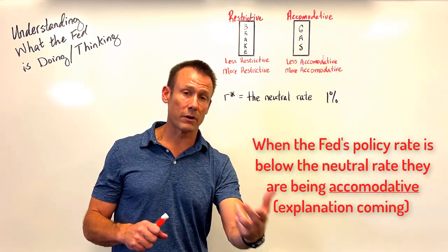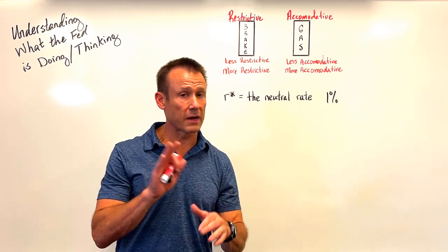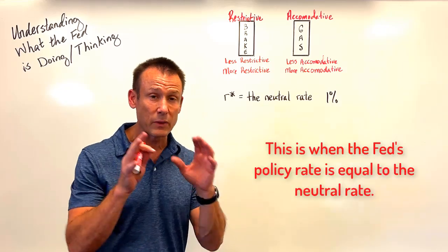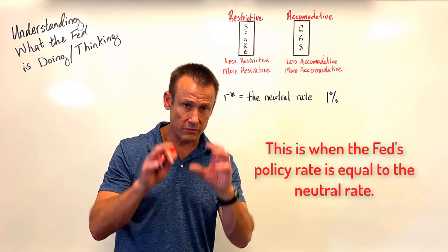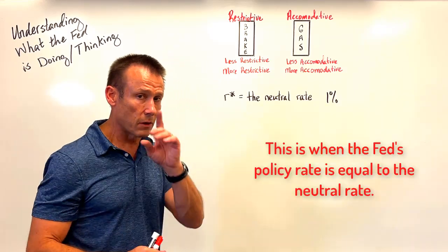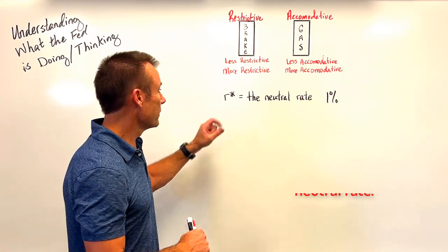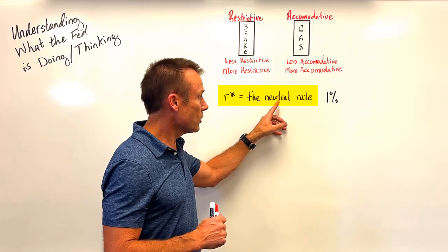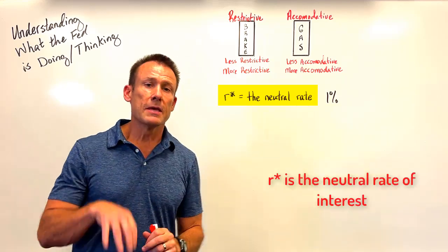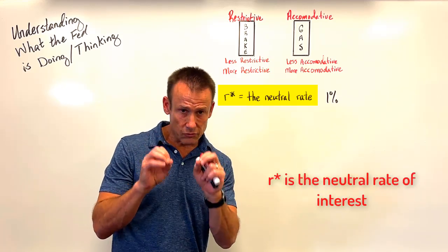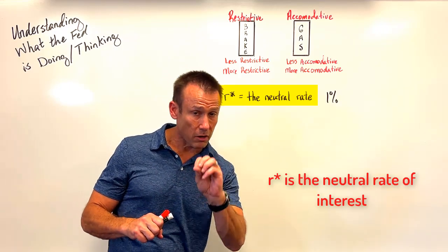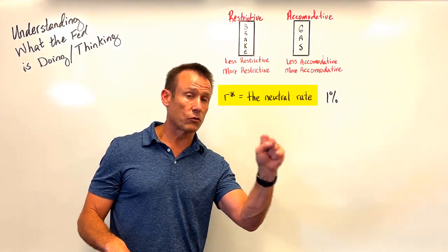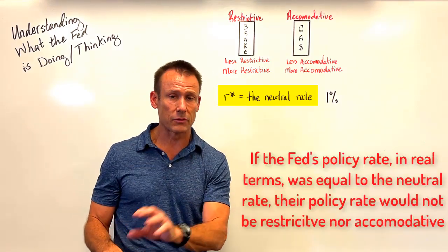And there's finally one more thing they could be doing: not have their foot on either pedal. To understand all of this, one of the biggest things we need to understand is there's this thing called R-star. R-star is the neutral rate — it is the interest rate that, if their policy rate was at it in real terms, the Fed would not be being restrictive nor accommodative.